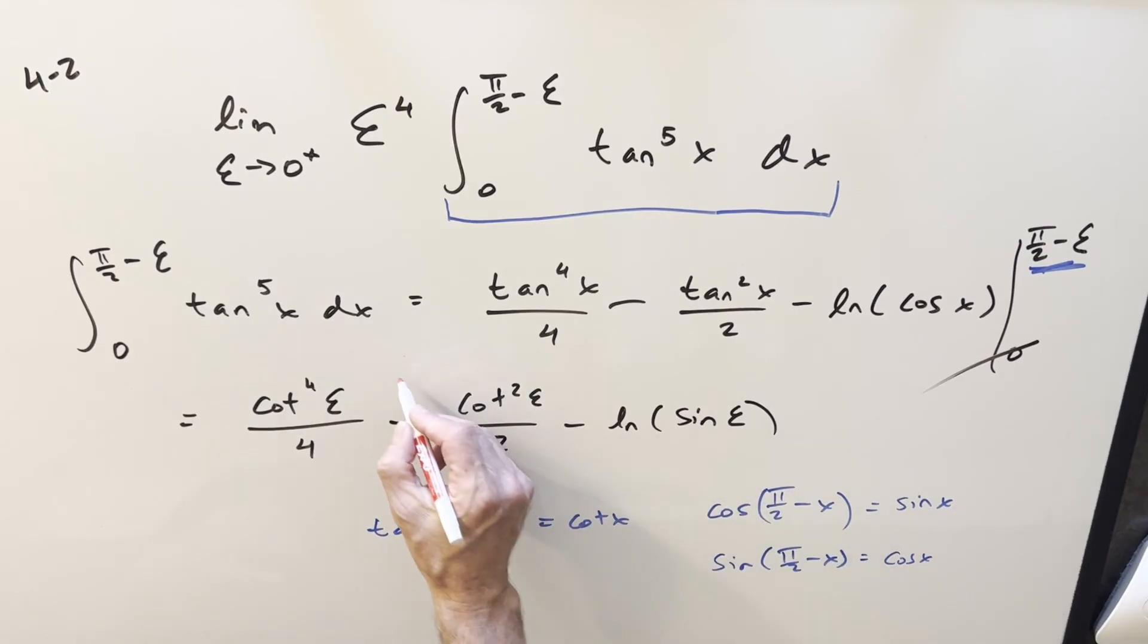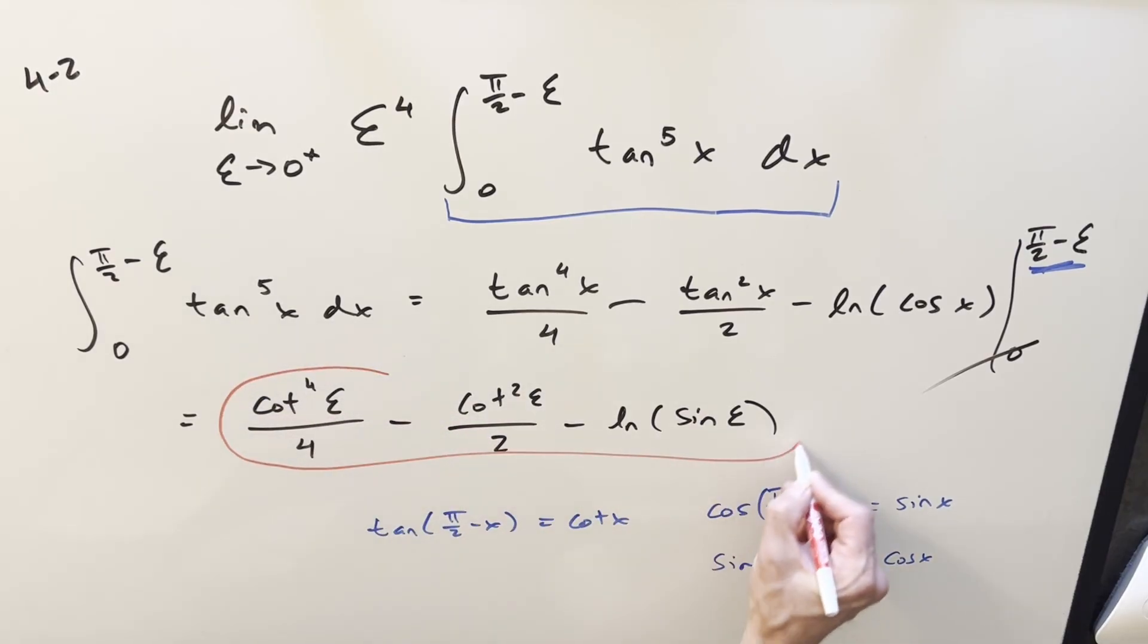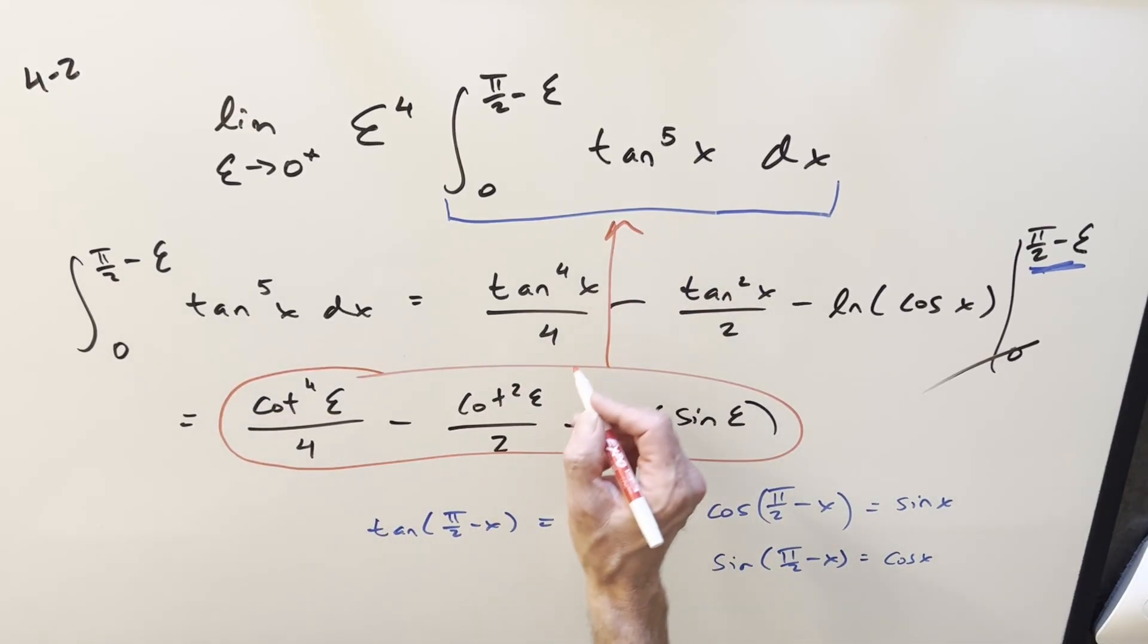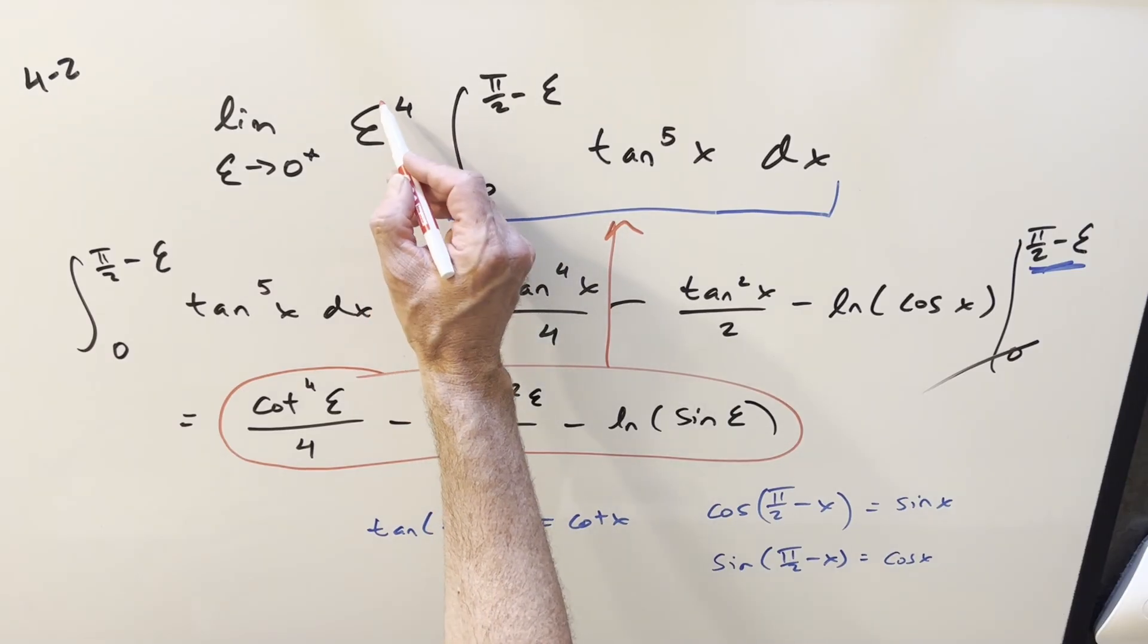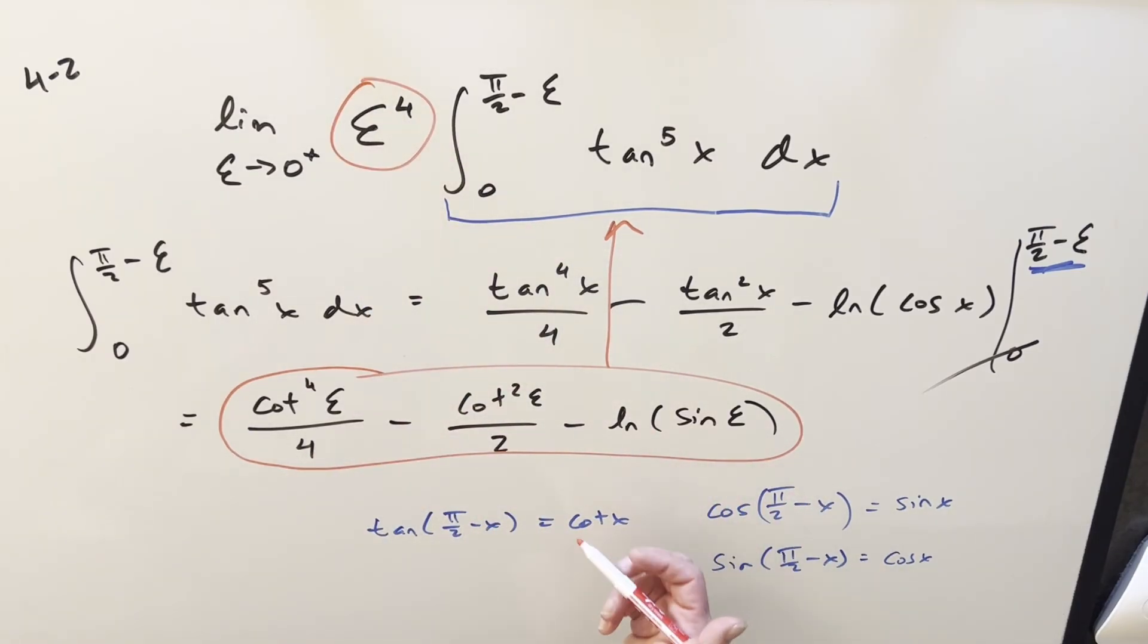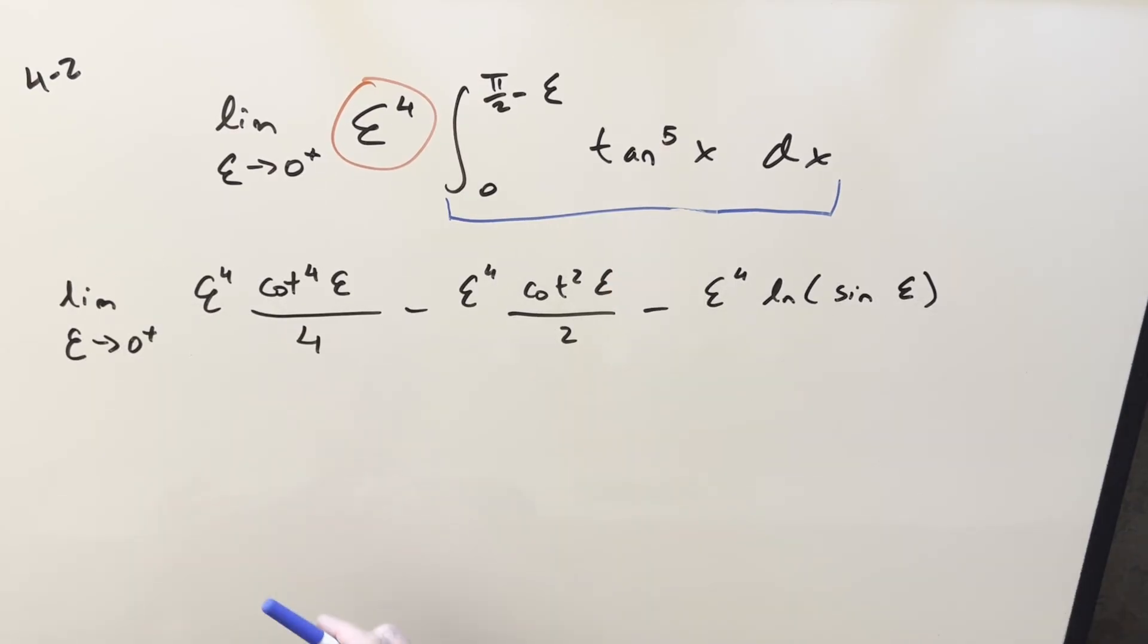So just plugging that in, we're just going to flip everything. And now all we need to do is we'll take this, plug it in for our whole integral right here. But when I do it, let's take this epsilon to the fourth and just distribute it into every term and evaluate that limit.